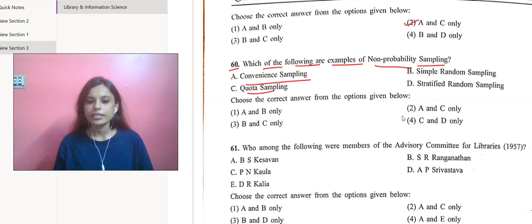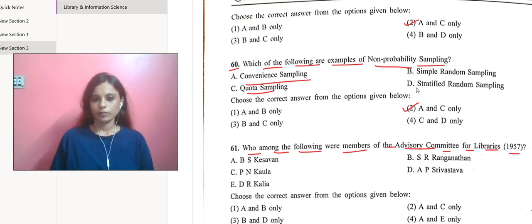Moving to the next question: who among the following were members of the advisory committee for libraries in 1957? The chairman was K.P. Sinha, then members included U. Bhadria, B.S. Kesavan, S. Ranganathan, T.D. Waknis, and Sohan Singh as secretary. We can go with only B.S. Kesavan, others were not there.